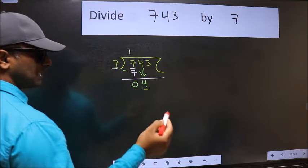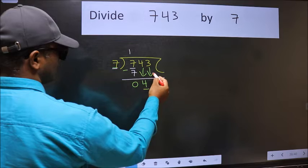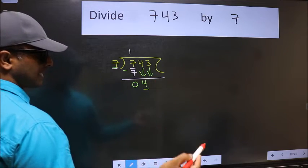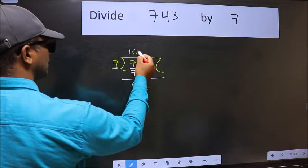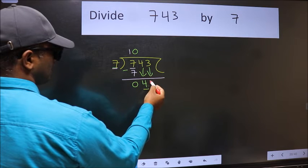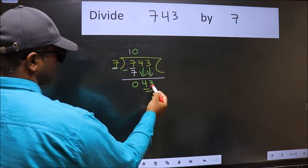So we should bring down the second number. And the rule to bring down the second number is we should put 0 here. Then only we can bring this number down. Now 43.